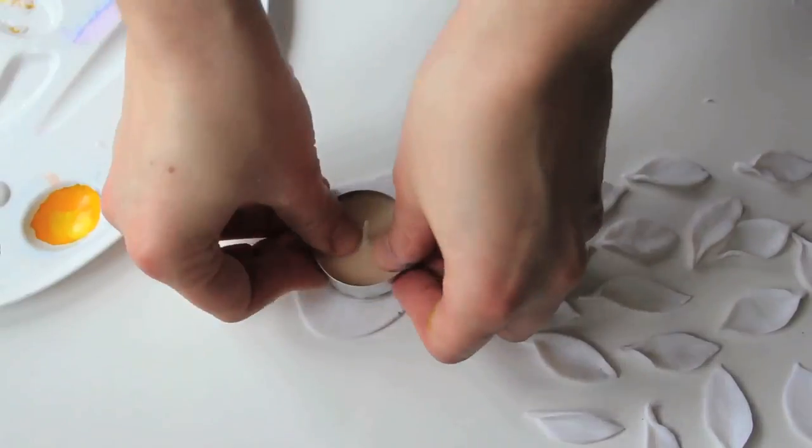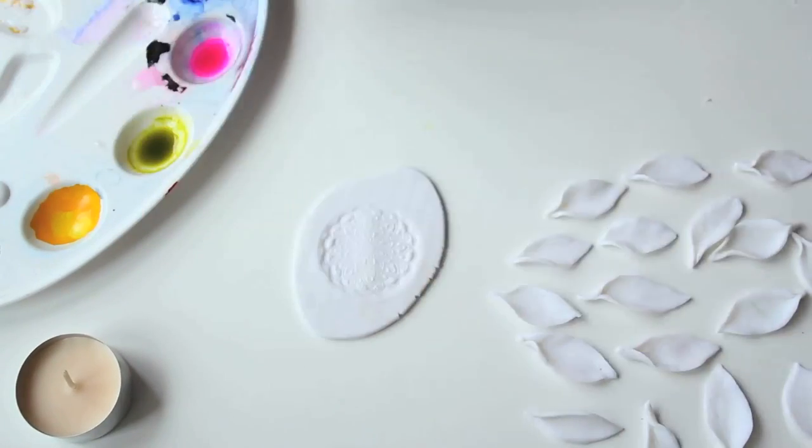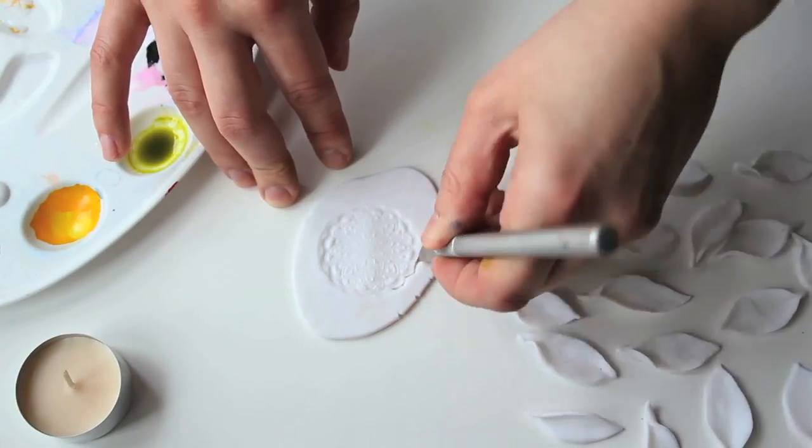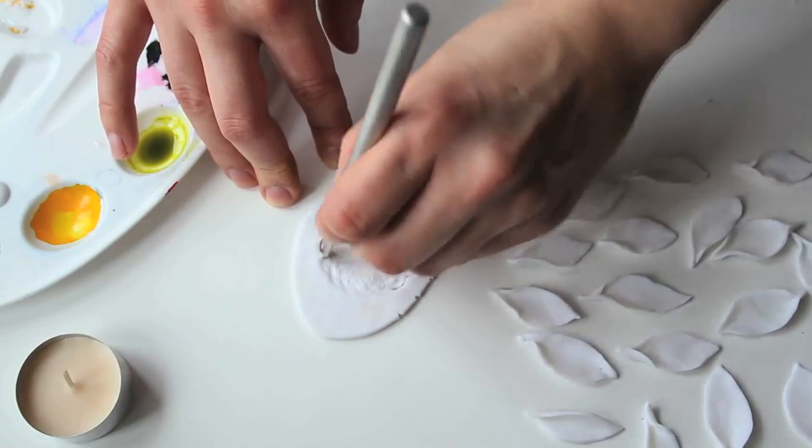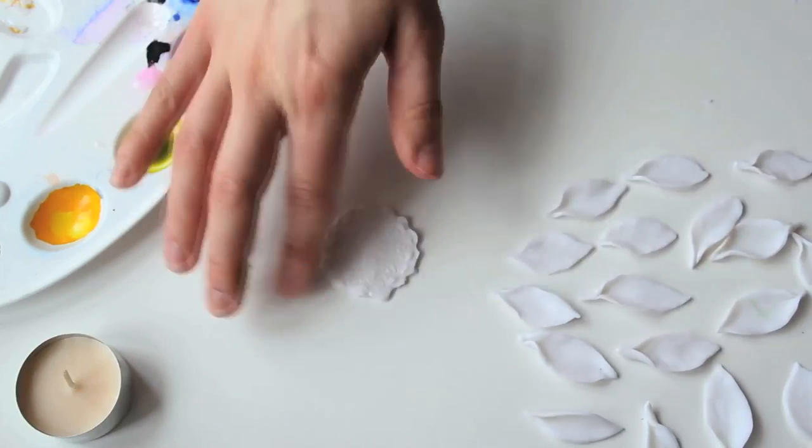So now, while everything else is baking, I will work on the heart of the lotus. You can create it in any way you want. The main idea is to make the heart of the lotus as big as the base of your candle. I will use my silicone stamp for it.